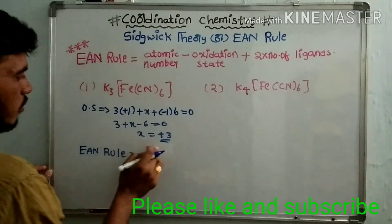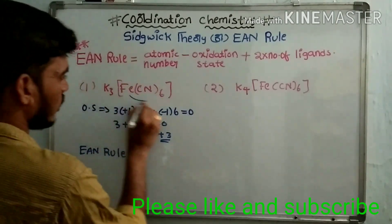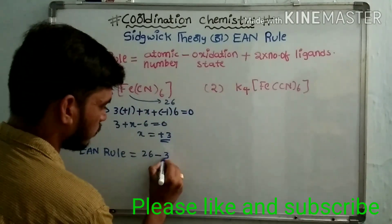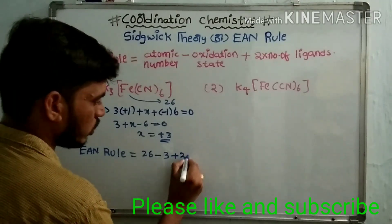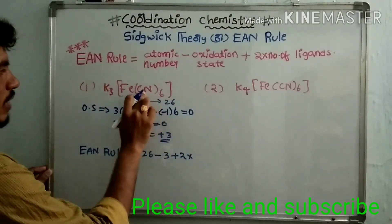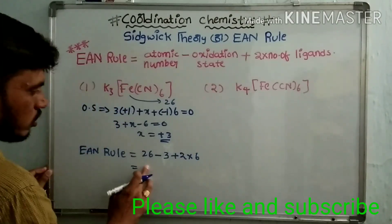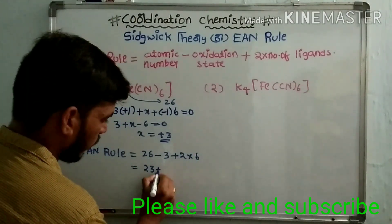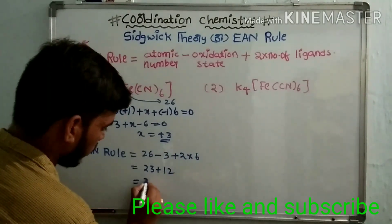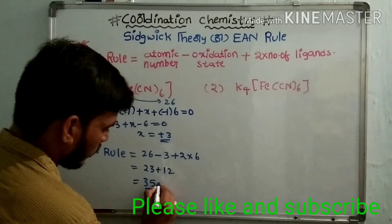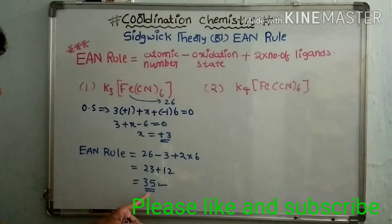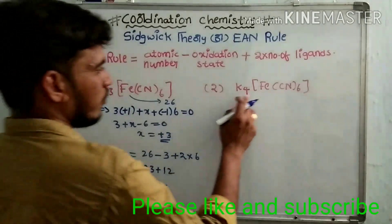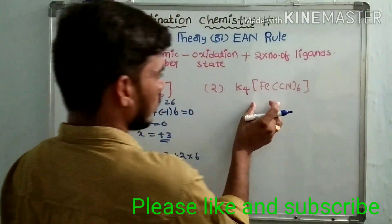Now we calculate the EAN value. The atomic number of iron is 26. EAN = 26 − 3 + 2 × 6 = 23 + 12 = 35. The value 35 does not correspond to any inert gas atomic number, so this complex is not the more stable one.